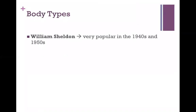One theory of criminality that was very popular in the 1940s and 1950s was this idea of body types. The original research done here was actually with juvenile delinquents, not adults. Following this positivist tradition, the researcher — specifically William Sheldon — went into these institutions and had pictures taken of these juveniles. He looked at what type of body and facial features were common in his juvenile detention facilities.